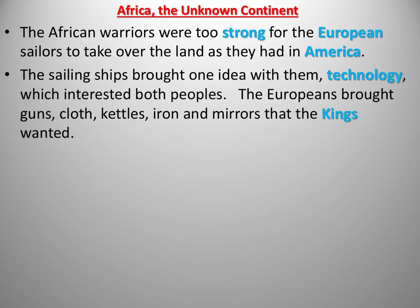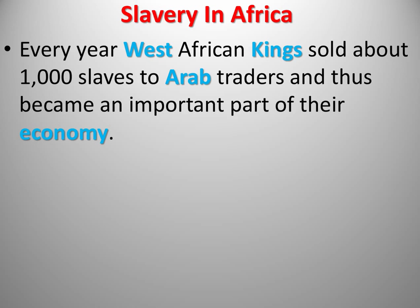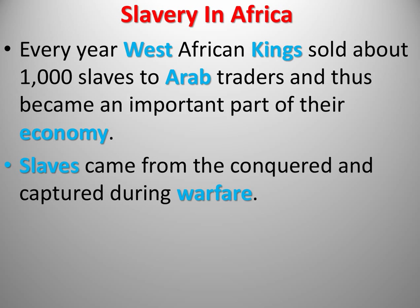The sailing ships eventually brought the one thing African people wanted: technology. The Europeans had guns, cloth, kettles, iron — manufactured goods that the kings of Africa wanted. The one thing the kings had plenty of to trade for those goods were people — a healthy, hardy people that could mine and grow crops, who would basically replace the Native Americans, who were very poor slaves in the New World. And so that's what they did — they traded out those people for their own economy. That was nothing new; they had done it with Arab traders crossing the Sahara Desert years before, and now they were doing it with the Portuguese. It was definitely not an uncommon practice.